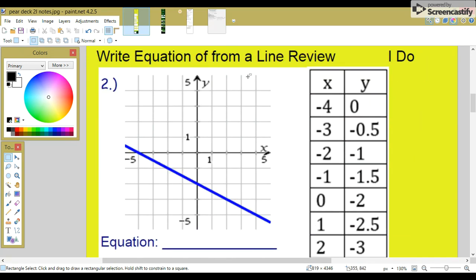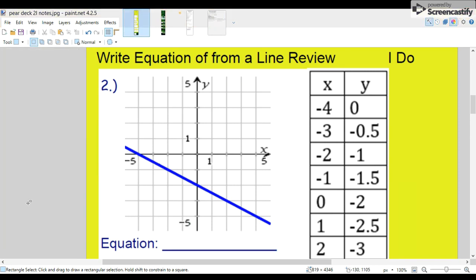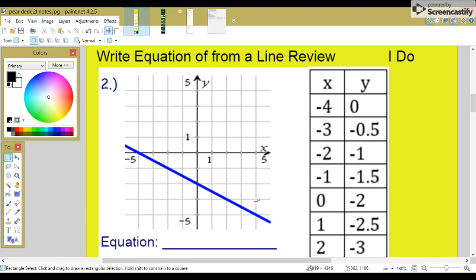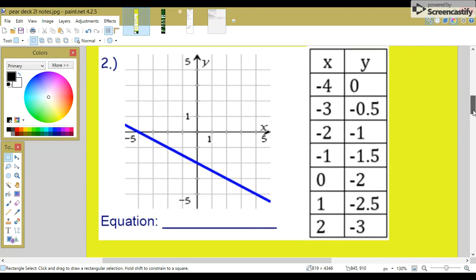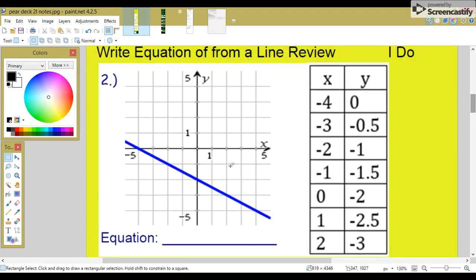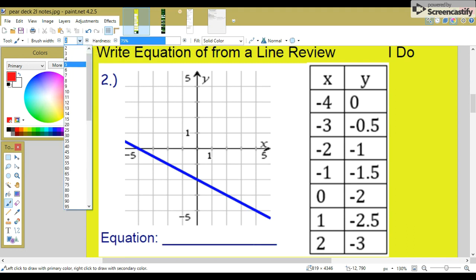Write equation from a line review. So we have this line, and here's our table. To find the equation, we need to find both our slope m and our y-intercept b. To find our slope, let's find two lattice points on the graph.